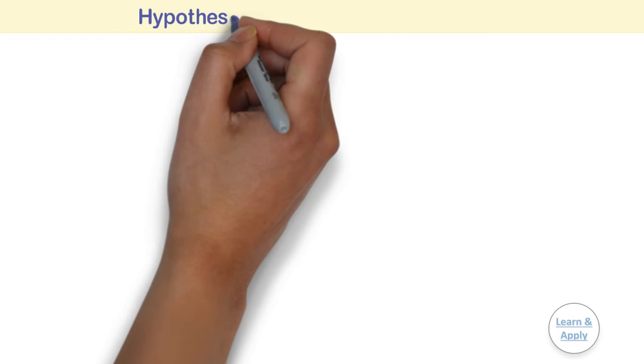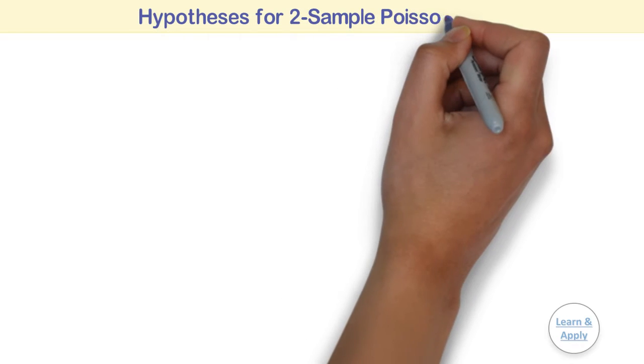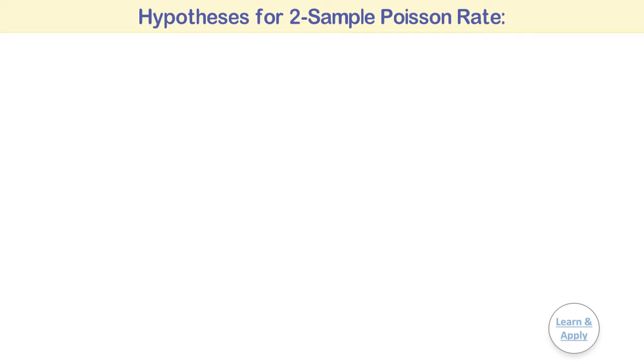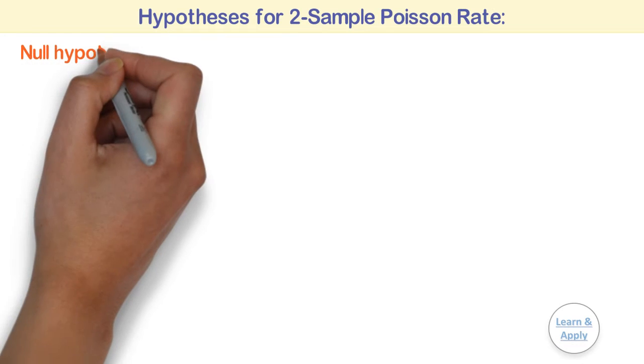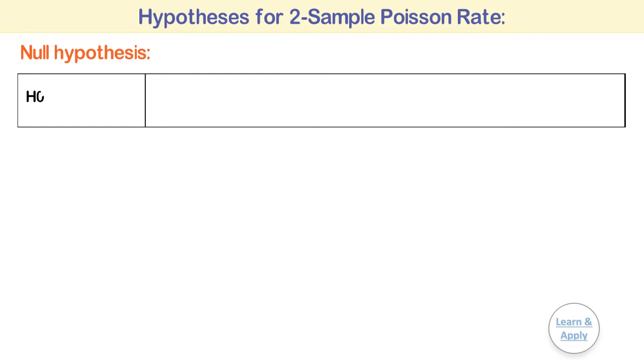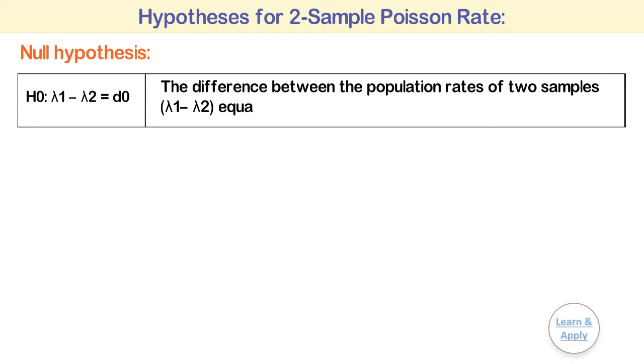Hypotheses for two-sample Poisson rate. For the two-sample Poisson rate, the hypotheses are as follows. Null hypothesis: H0: λ1 - λ2 = D0, meaning the difference between the population rates of two samples, λ1 - λ2, is not equal to D0.